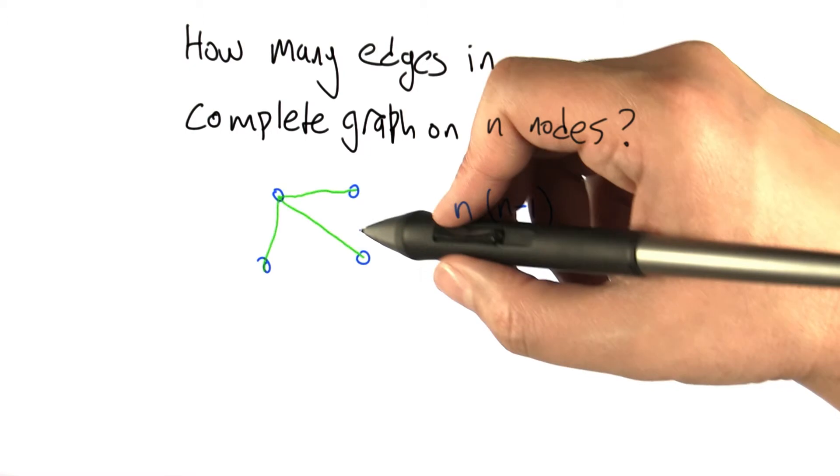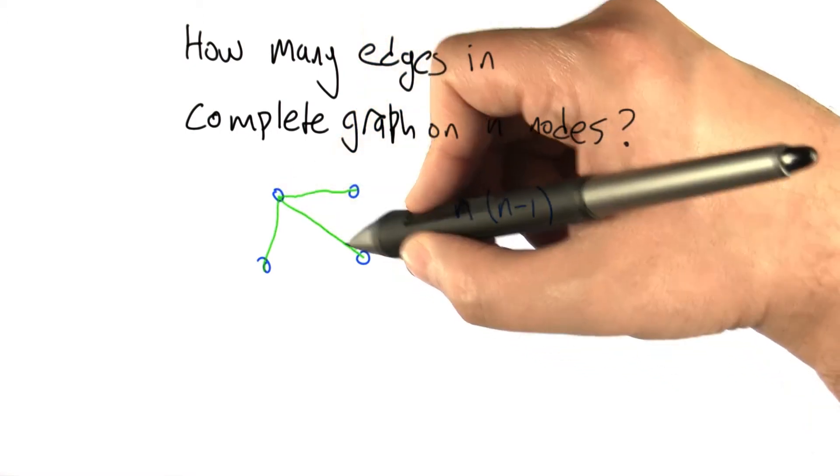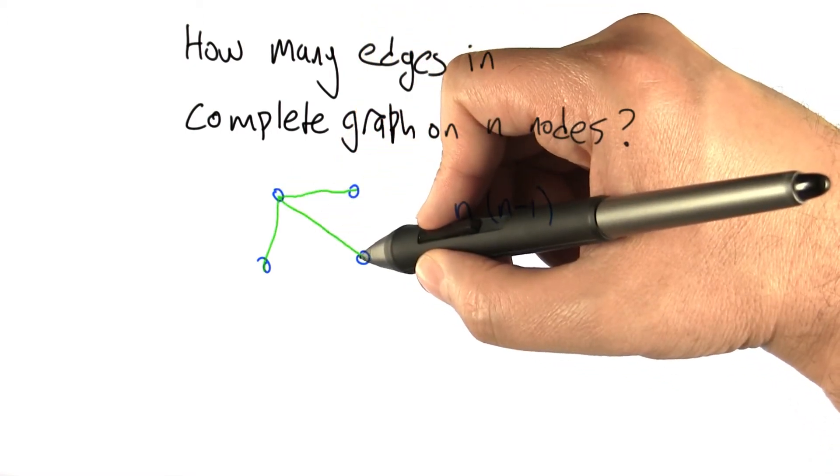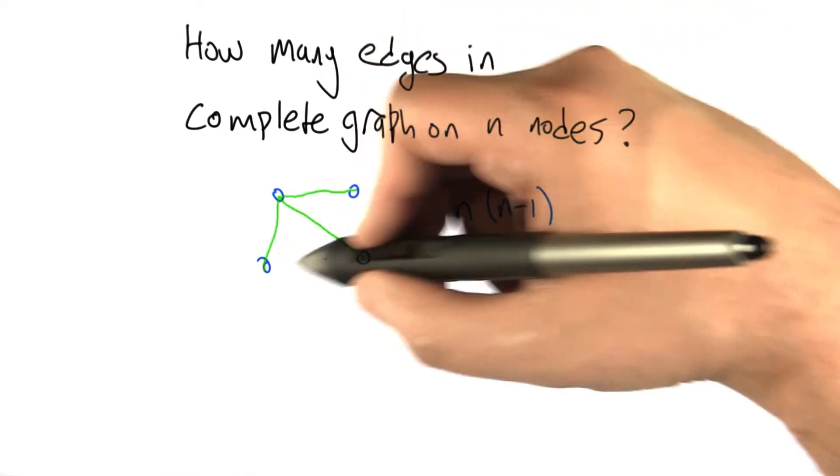But notice what happens if we use that as our formula. We're going to count this edge as it goes from this node to this node, but we're also going to count it again as it goes from this node to this node. So we've double counted everything.